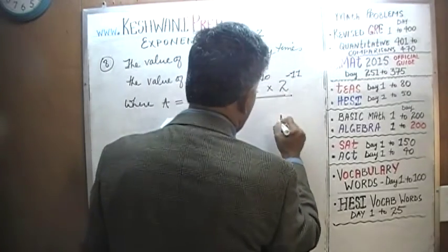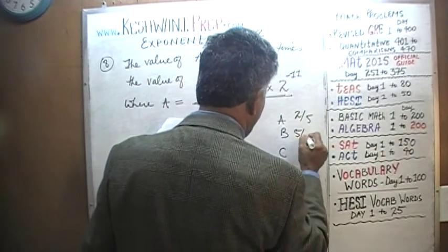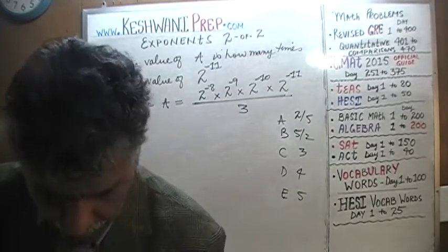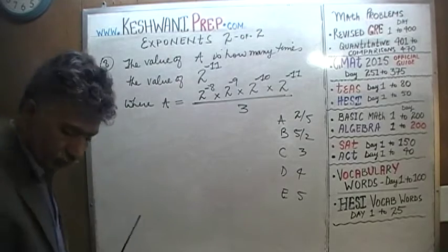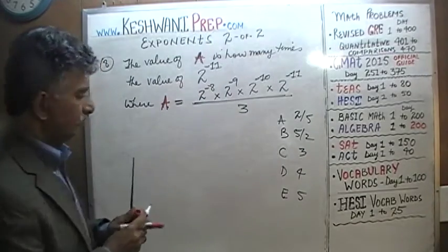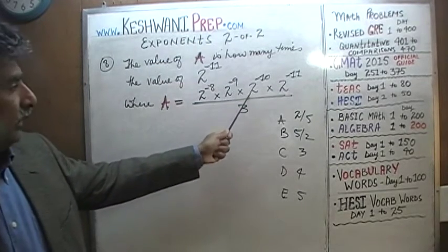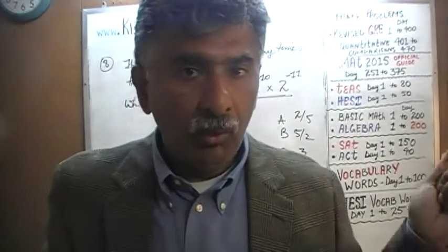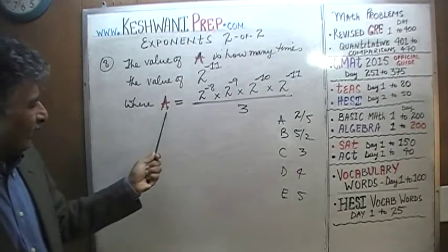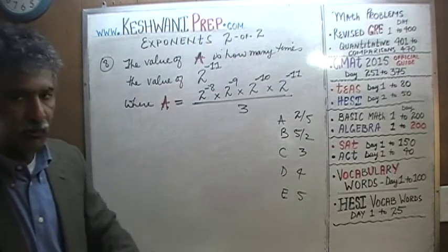Here are the answer choices: A — 2/5, B — 5/2, C — 3, D — 4, E — 5. One more time: the value of A, where A equals 2 raised to negative 8 plus 2 raised to negative 9 plus 2 raised to negative 10 plus 2 raised to negative 11, the whole product divided by 3. Does A equal 2 raised to negative 11 times 2/5, or times 5/2, or times 3, or times 4, or times 5? Do it yourself.